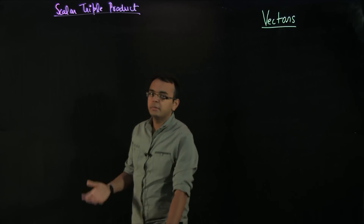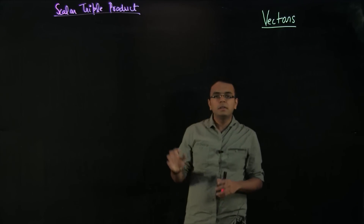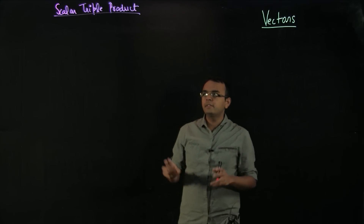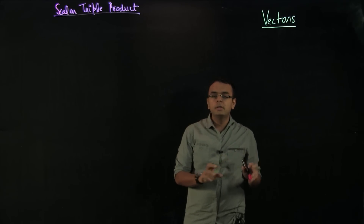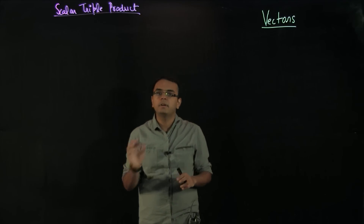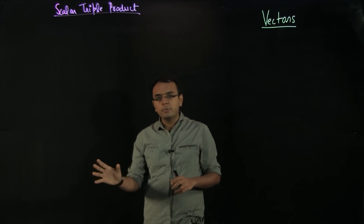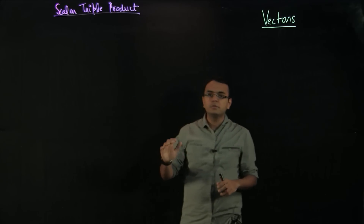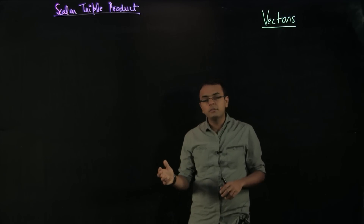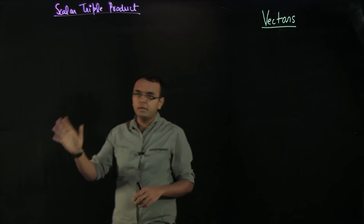What is a scalar triple product? Till now we have done dot product, which was A·B, and cross product, which was A×B. The name 'triple' suggests there are three quantities — vector A, vector B, and vector C. And it is a scalar product, just like dot product. So there will be three vector quantities A, B, and C, and the output will be a scalar.